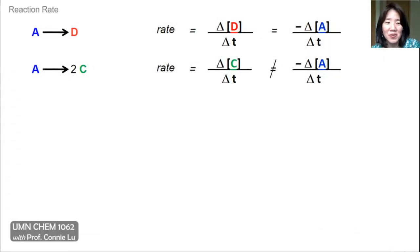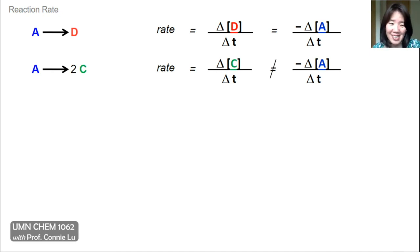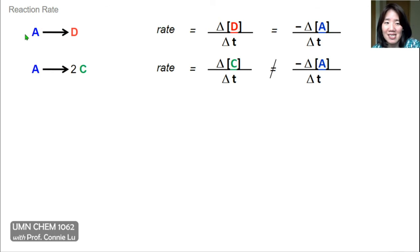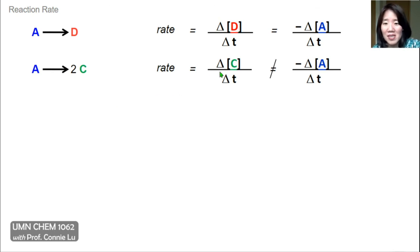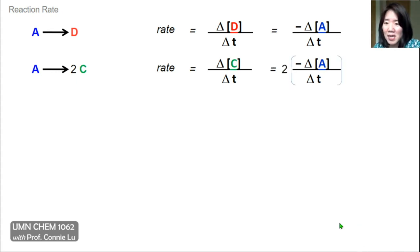We'll now show how the reaction rate for the same reaction can vary depending on whether you're asking about a particular reactant or a particular product. Up until now we've dealt with simple reactions like one molecule of A turning into one molecule of D, where the rate of D formation is equal and opposite to the disappearance of A. But if one molecule of A becomes two molecules of C, then as every molecule of A disappears, two molecules of C form. The formation of C is going to be twice as fast as the disappearance of A.